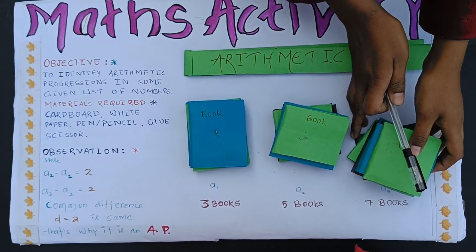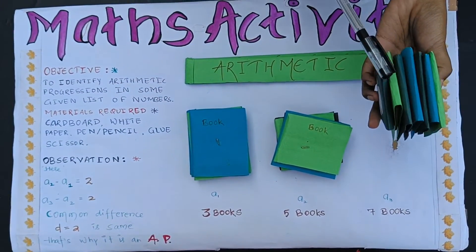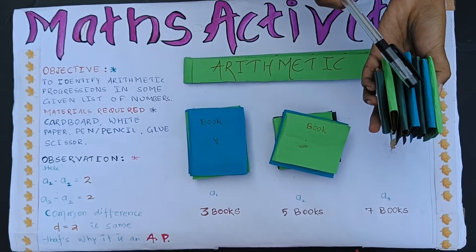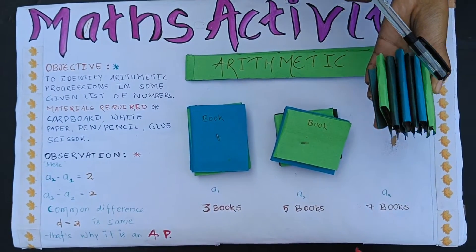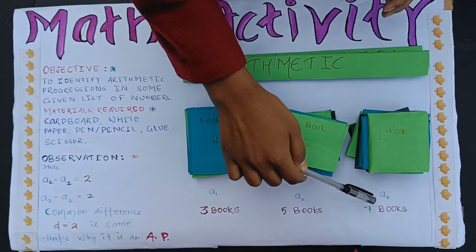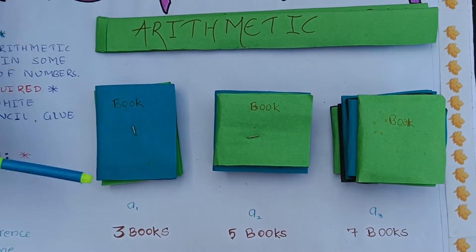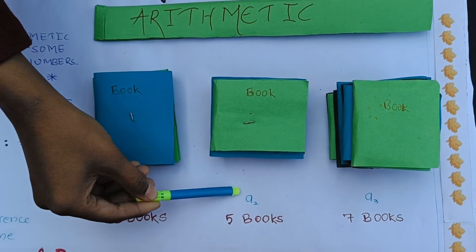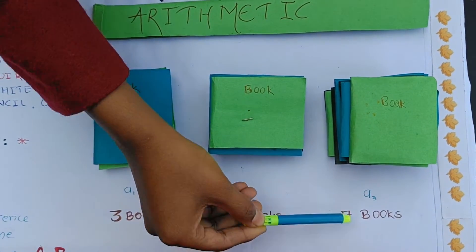In the third set, we have taken seven books: 1, 2, 3, 4, 5, 6, 7, which is A3. Hence, A1 is 3, A2 is 5, A3 is 7.